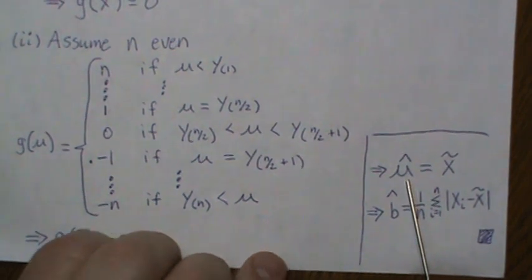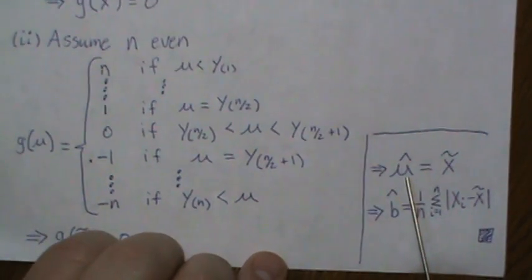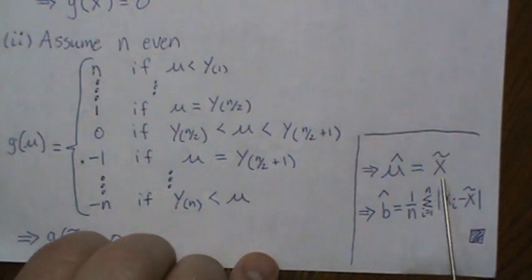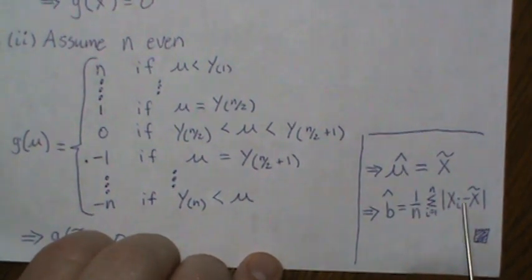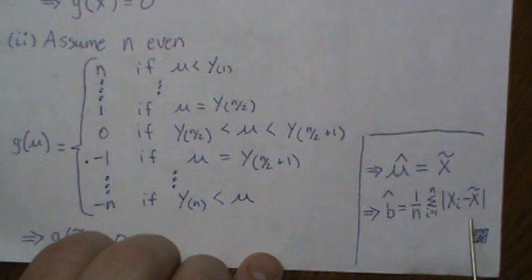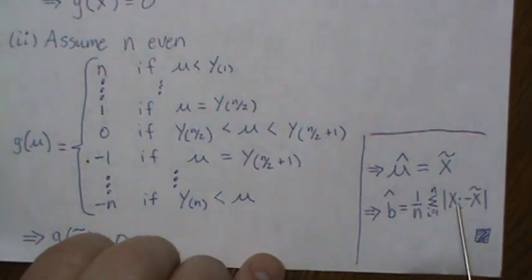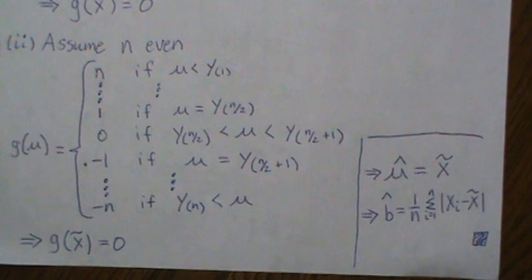Okay, so that says that our maximum likelihood estimator of mu is the median. But then since we know that's the maximum likelihood, we can plug it in for our value for b, and then that this is the maximum likelihood estimator for b.